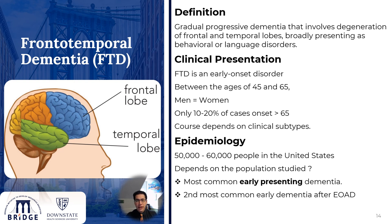Only 10 to 20% may begin after 65 years of age, and the course usually depends on the clinical subtypes. There are about 50,000 to 60,000 cases in the United States, and it could be considered the most common early presenting dementia, and the second most common early dementia after early onset Alzheimer's disease.